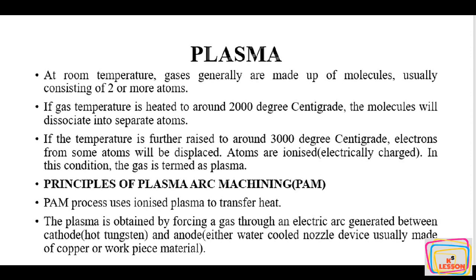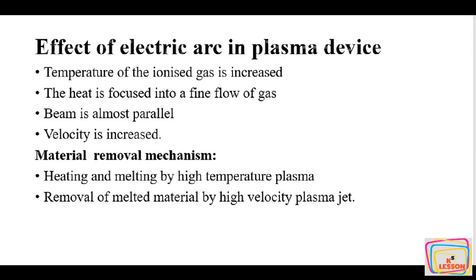The principle of plasma arc machining uses ionized plasma to transfer heat. The plasma is obtained in this process by forcing a gas through an electric arc generated between a cathode — a hot tungsten electrode — and an anode, either the workpiece or a water-cooled nozzle device, usually made of copper. The temperature of ionized gas is increased, the heat is focused into a fine flow of gas, the beam is almost spiral, and velocity is increased. All these parameters help obtain the plasma and machine the workpiece.